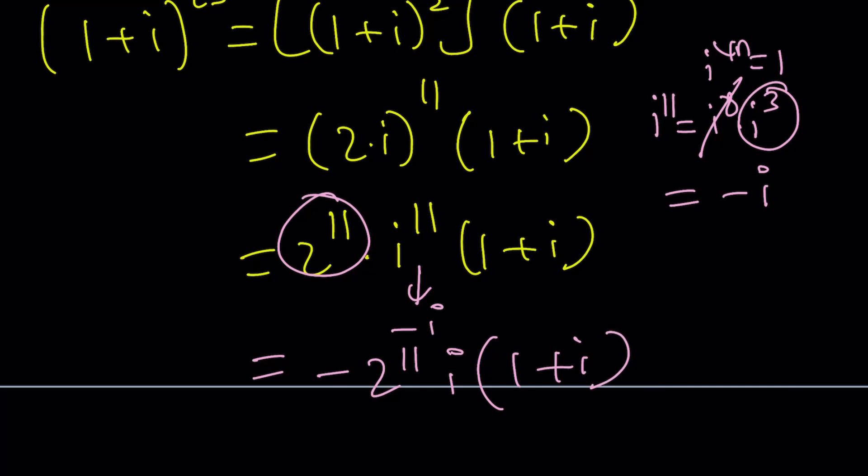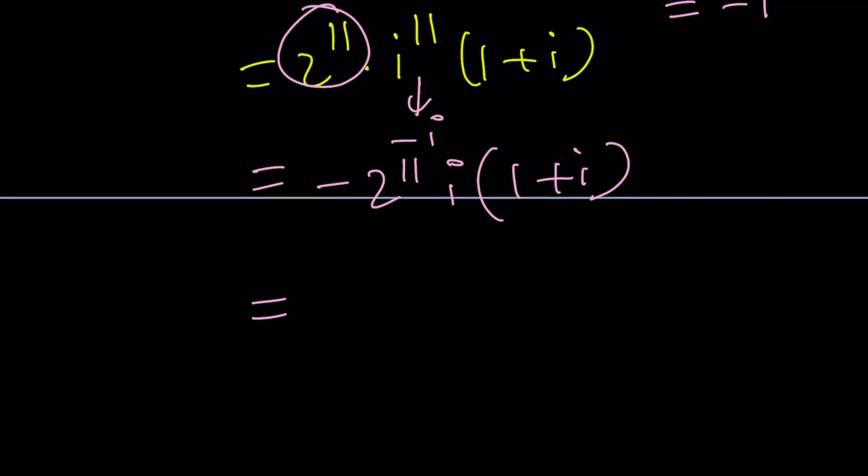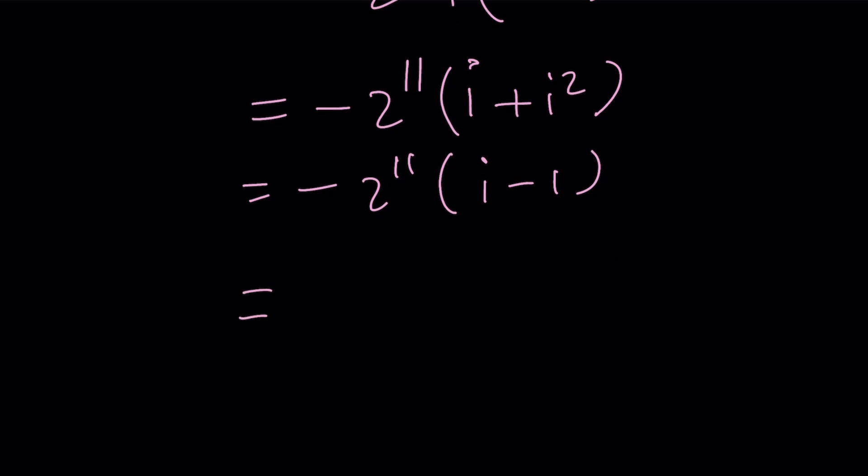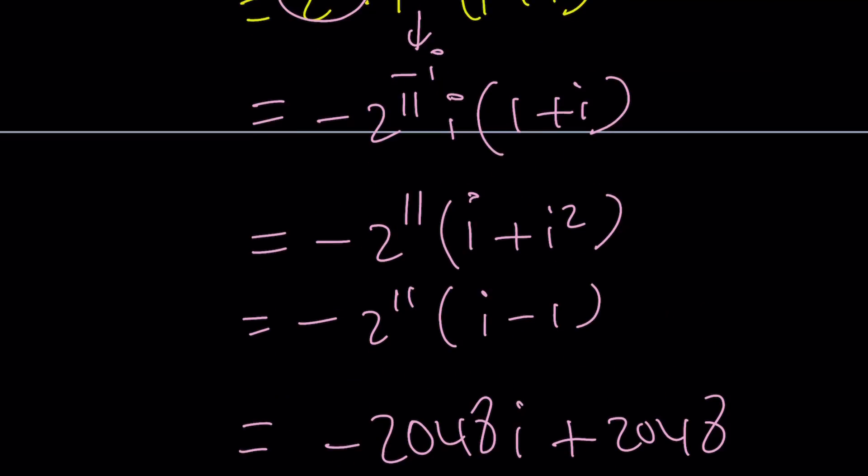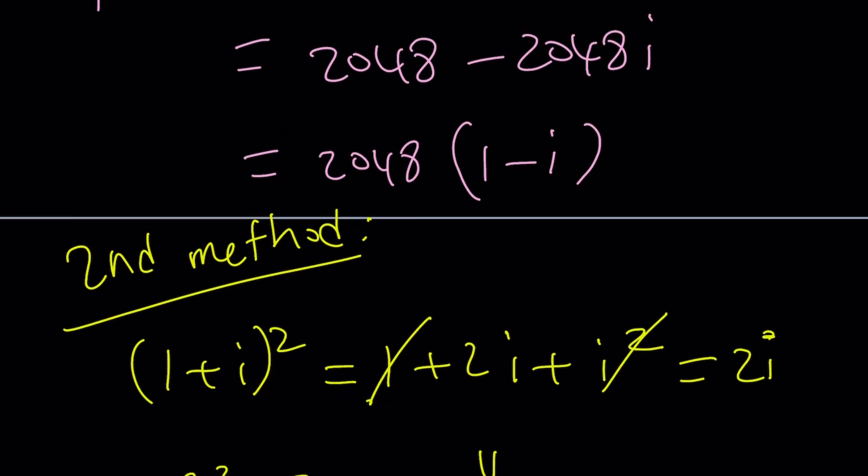So, it's going to be negative 2 to the power 11 i times 1 plus i. And then, you're going to distribute this negative 2 to the power 11. i times 1 is i plus i squared. i squared is negative 1. i minus 1. Distribute one more time. You're going to get negative 2048 i plus 2048. And as you know, this is the same thing as 2048 minus 2048 i. As before. Yay! We got the same answer. It shouldn't be a surprise.